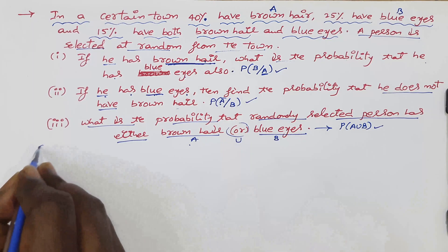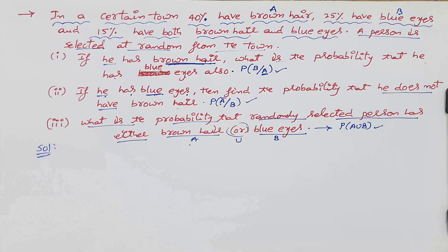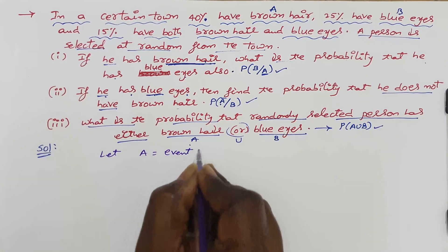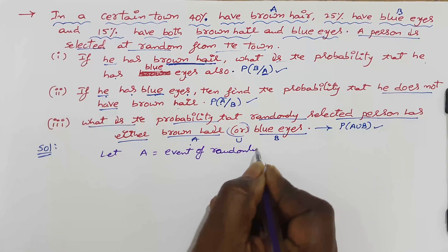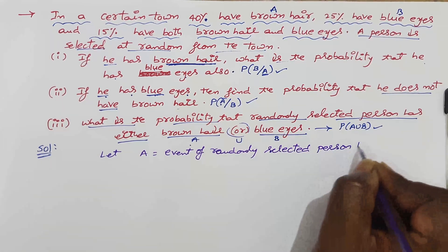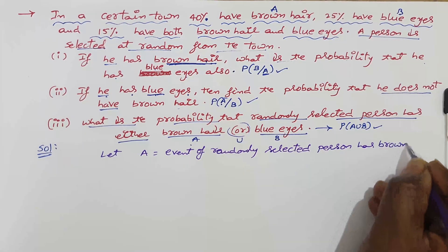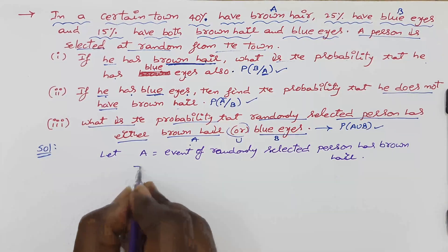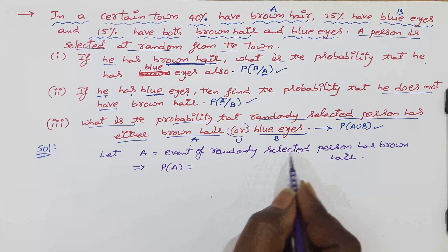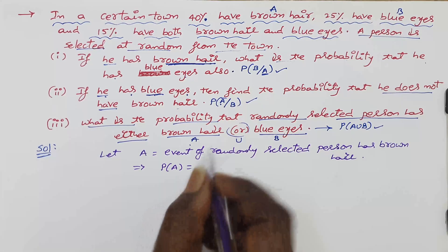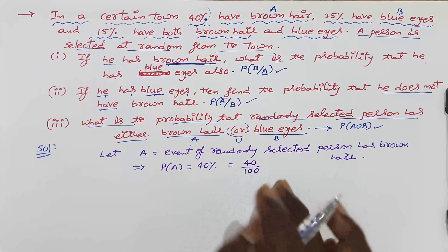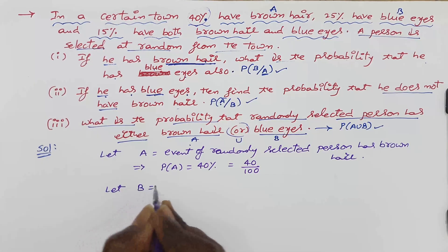Let A be the event that a randomly selected person has brown hair. According to the statement, the probability of A is 40 percent, so P(A) = 40/100. Let B be the event that a randomly selected person has blue eyes.